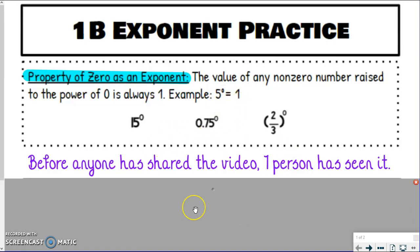So let's do these three examples. I'm sure you can fill them out real quick. Fifteen to the zero power equals one, right? It always equals one. Zero point seventy-five or seventy-five hundredths to zero power, again, equals one. Doesn't matter the number. If it's raised to zero power, always equals one. So two-thirds to zero power equals one, of course. So no matter what, no matter what the number is, if it's raised to zero power, it will always equal one. So keep that idea in mind of before anyone has shared it. So zero shares, one person has seen it.